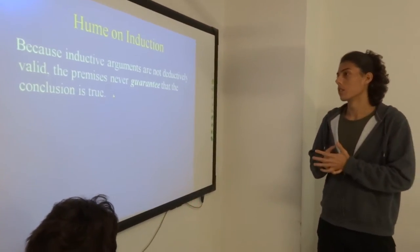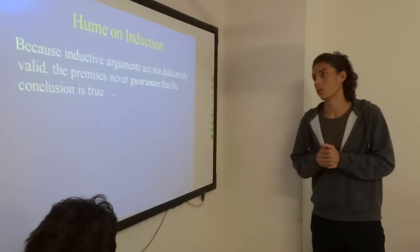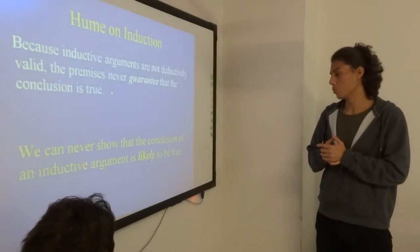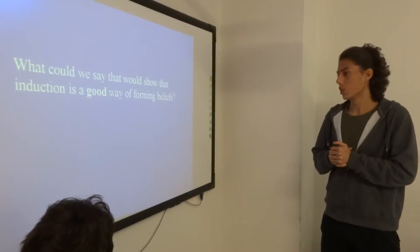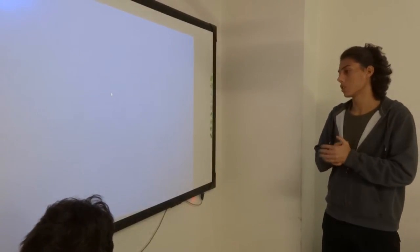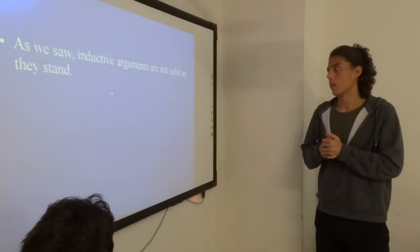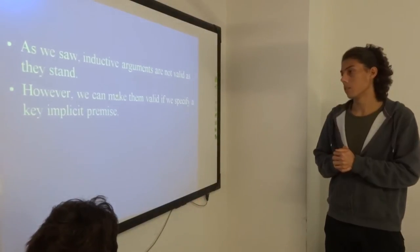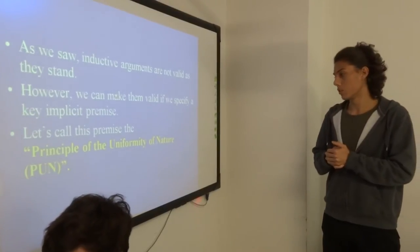Hume's induction. Because inductive arguments are not deductively valid, the premises never guarantee that the conclusion is true. We can never show that the conclusion of an inductive argument is likely to be true. What could we say that would show that induction is a good way of forming beliefs? It seems like the only thing we can say is that induction works so well. However, we can make them valid if we specify a key implicit premise. Let's call this premise the principle of uniformity of nature, the PUN.